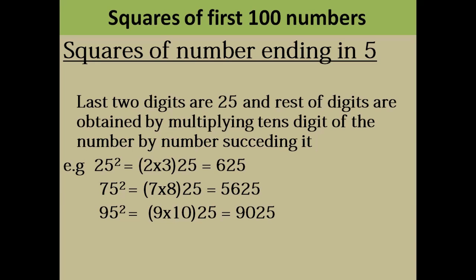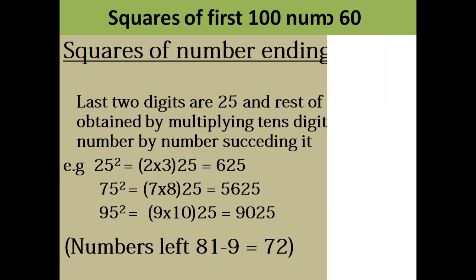90, last two is 25. This is very simple. So you are now left with 72 numbers. You have learnt 28 numbers, out of which 19 numbers you knew, 9 numbers I made you learn right now. So now let's see further.